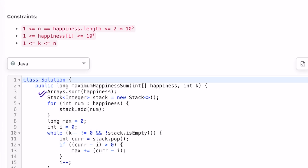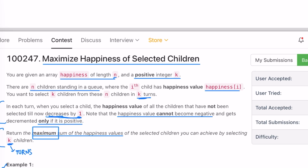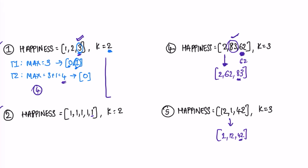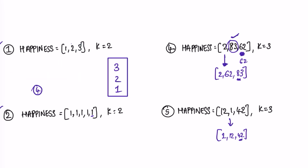This is the tricky part: they mention children in a queue, so you might think to use a queue, but it is better to use a stack because we need to pick the maximum value. After sorting, I add the array elements into the stack one by one from left to right, so the maximum value ends up at the top. I create a variable max initially zero, then pop the top of the stack and store it in a variable current.